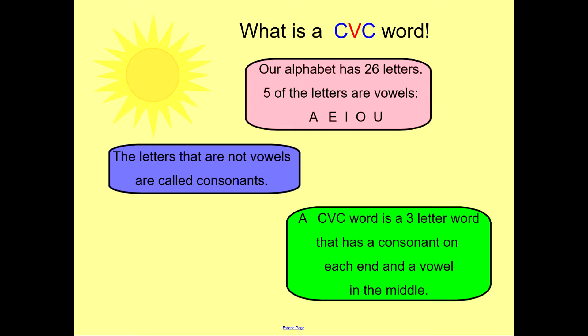What is a CVC word? Our alphabet has 26 letters. Five of the letters are vowels: A, E, I, O, and U. The letters that are not vowels are called consonants. A CVC word is a three-letter word that has a consonant on each end and a vowel in the middle.